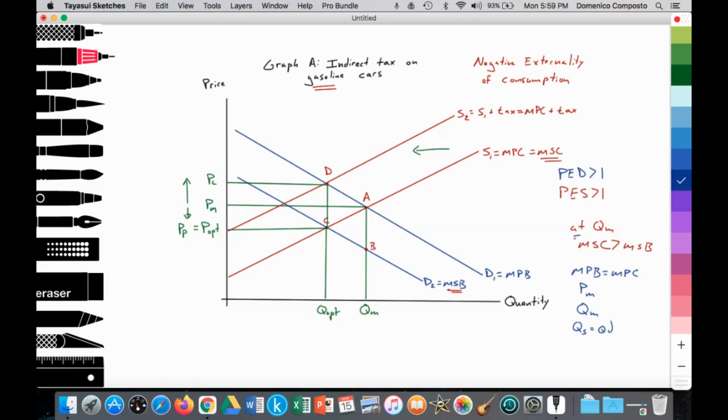We notice, though, that at QM, the marginal social cost of the consumption of those gasoline cars is greater than the marginal social benefit. This is a result of the carbon emissions emitted from these cars as households consume those cars. So that generates a welfare loss, which is seen in the shaded area. Society would like less.